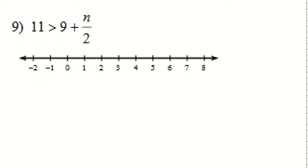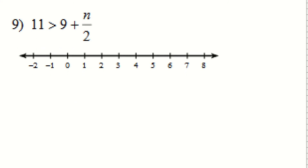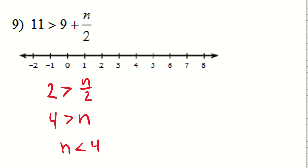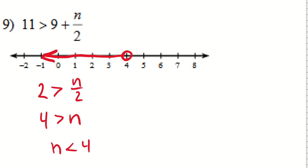For number nine, I subtract 9 from both sides: 11 minus 9 gives 2, so 2 is greater than N over 2. Multiplying both sides by 2 gives 4 is greater than N, which I rewrite as N is less than 4. The boundary is at 4, it's an open boundary, and the solution is all values to the left — less than 4. Checking with zero: 11 is greater than 9 plus 0, which confirms the direction.